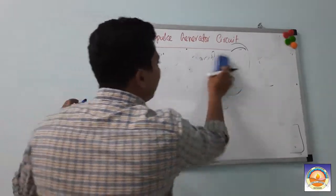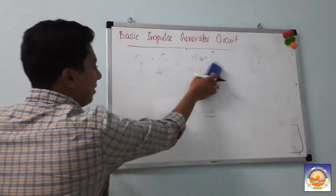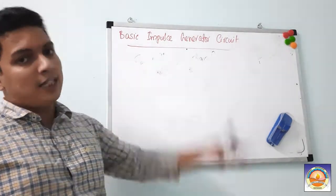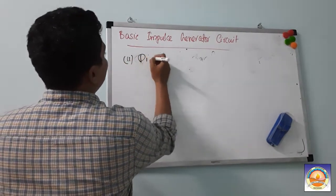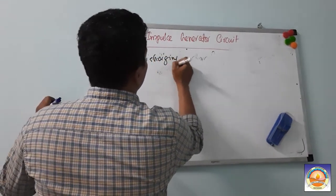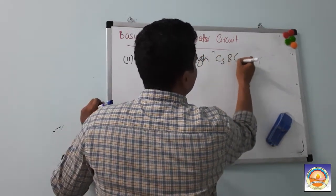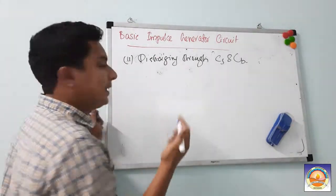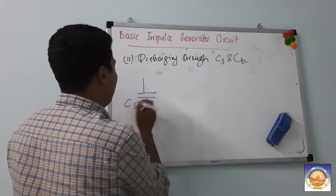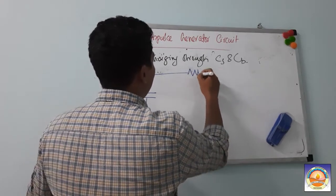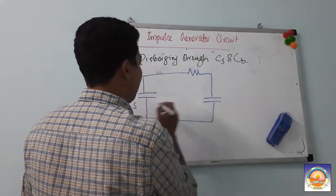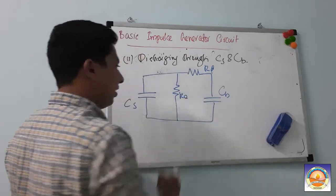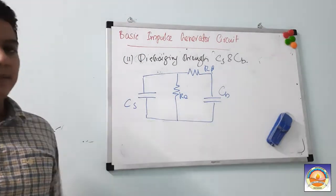The first step of charging created the initial rising part of the wave. The next step is understanding the discharging part — discharging through CS as well as CB. The discharge circuit has CS and CB in parallel, discharging through Rd and Re in series. Since Re is 10 times larger than Rd, most of the potential drops across Re.